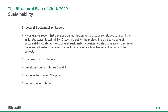The structural sustainability report is defined as a cumulative report that develops throughout the design and construction stages. It records the sustainability outcomes for the project, the agreed structural sustainability strategy, the design targets, how we're going to achieve them, and ultimately the level which has actually been achieved at the end. This is prepared during stage two — concept design — gets developed during stages three and four as the design develops, implemented during stage five construction, and verified at handover.